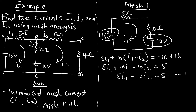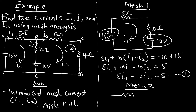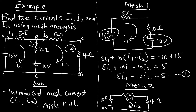Now we consider mesh 2. We draw the diagram for the second mesh, which contains a 6 ohm resistor, a 4 ohm resistor, a 10 ohm resistor, and a 10 volt voltage source. The mesh current passing through the second mesh is i2.